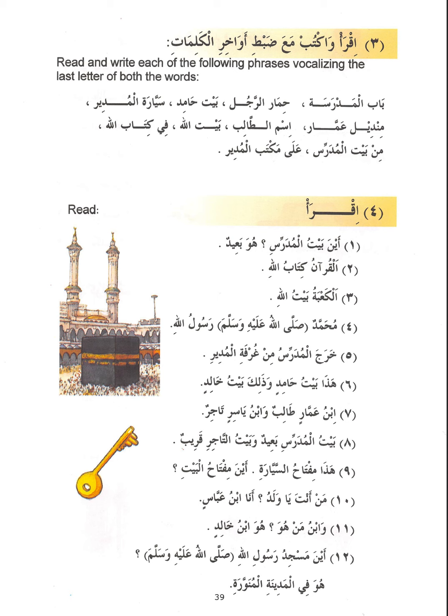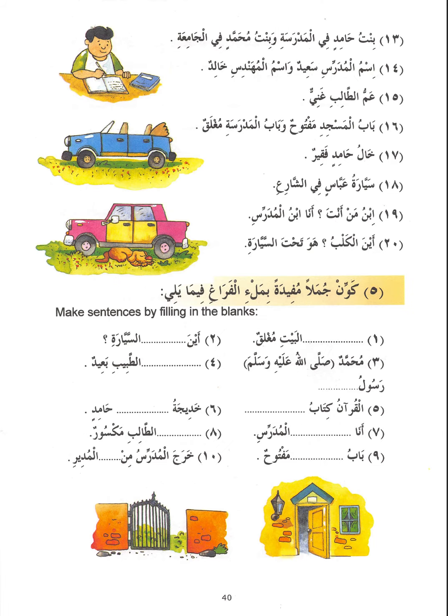The phrase Masjidu Rasoolillah means 'the mosque of the Prophet of Allah' or 'Allah's Prophet's mosque.' Another example: Khalu Hamidin faqirun — Khalu here means the maternal uncle, your mother's brother. You can see further similar examples in the remaining exercises.